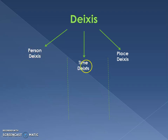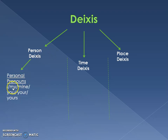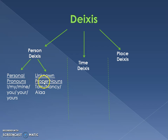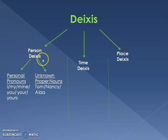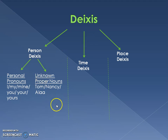Person deixis includes personal pronouns like 'I,' 'my,' 'mine,' 'you,' and 'yours' — all of these personal pronouns are categorized under person deixis. Unknown proper nouns also serve as deixis — for example, names like Tom or Nancy that are unknown remain deictic. But if we have a known proper noun, like the name of a president or William Shakespeare, then we don't have personal deixis, because we know who we're referring to and the reference doesn't change.